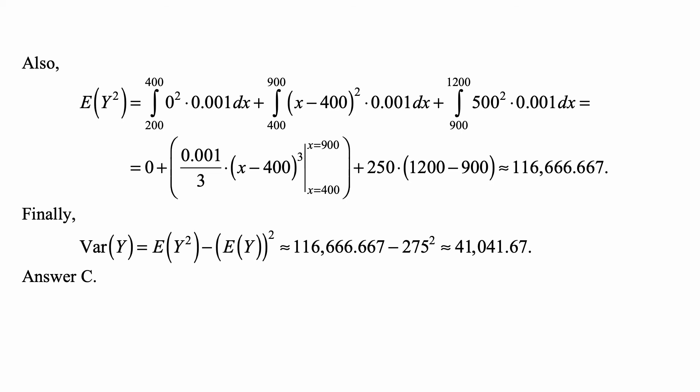The first one is 0. The second one, the integral, is one third (X minus 400) cubed times 0.001, and that's what you see here, evaluated from 400 to 900.